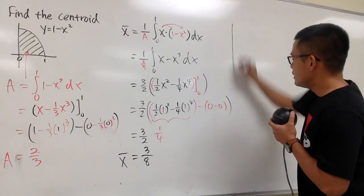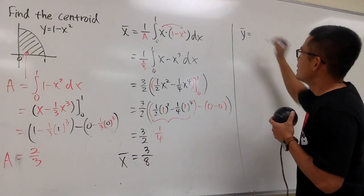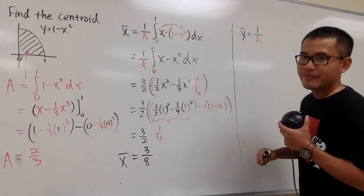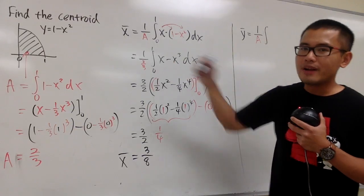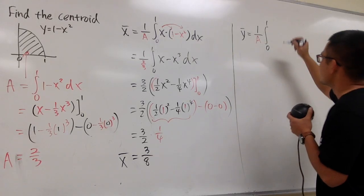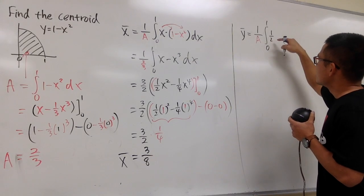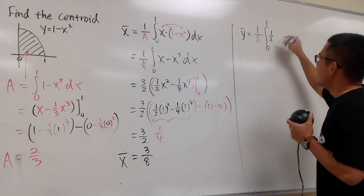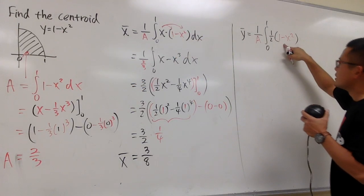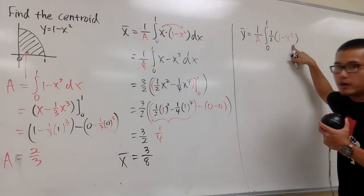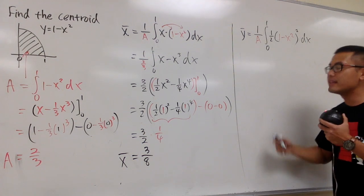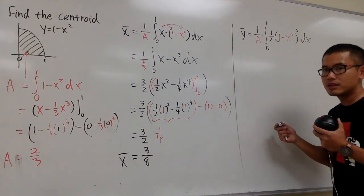And now moving on to y-bar. Y-bar is a little trickier, so pay more attention. First of all, we have 1 over the area as well, and we integrate from 0 to 1. Inside here, remember to multiply by 1 half — a lot of people miss this. And then we look at the function 1 minus x squared and square it. That's how you set up to get y-bar.